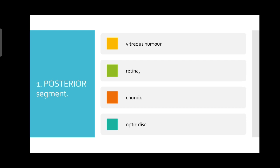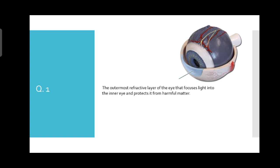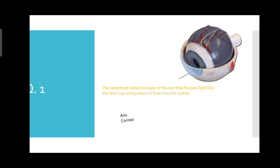Now we have some question and answers — try to do it yourself first. Question one: the outermost refractive layer of the eye that focuses light into the inner eye and protects it from harmful matter. The answer is the cornea, because it is the outermost refractive layer of the eye — it focuses light onto the retina and also protects us from harmful matter.